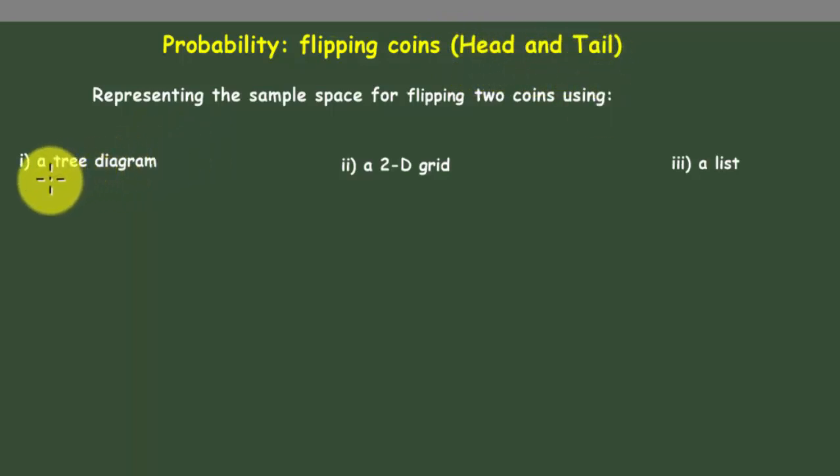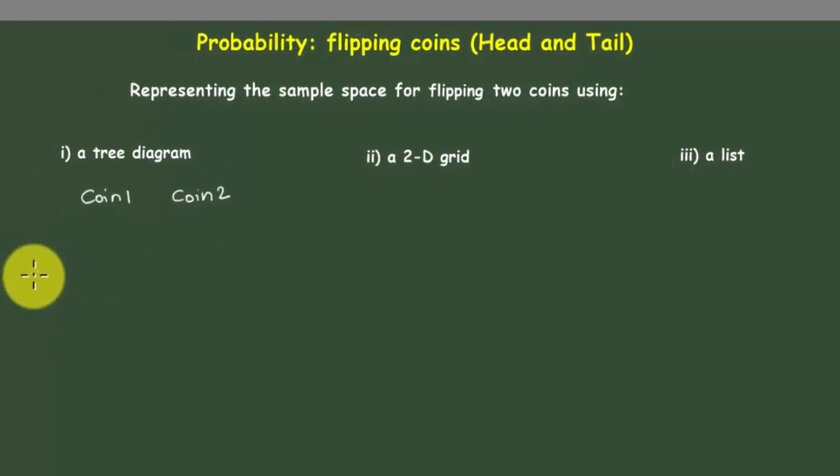We're going to do that using a tree diagram, a two-dimensional grid, or a list. Because we only have two coins, we're going to write here coin one and coin two, and then draw our possibilities.